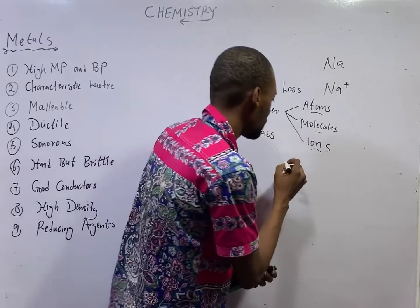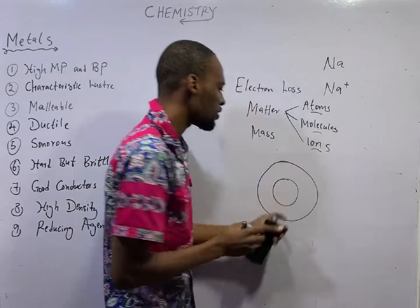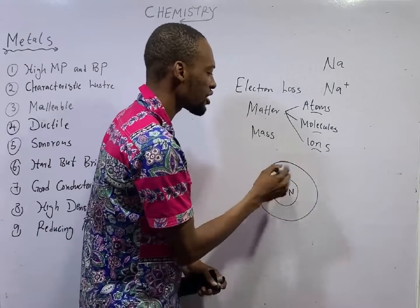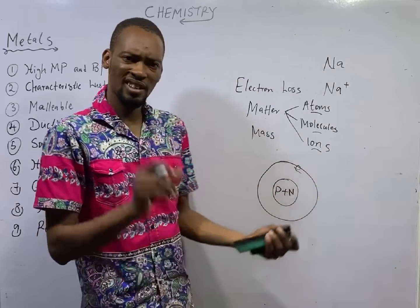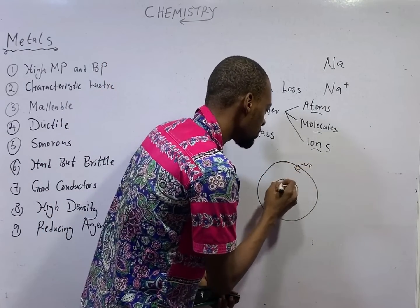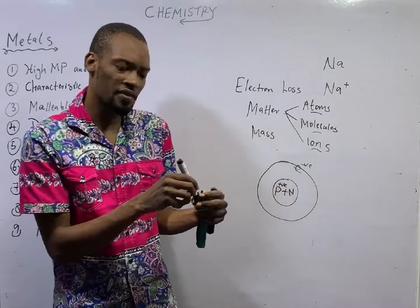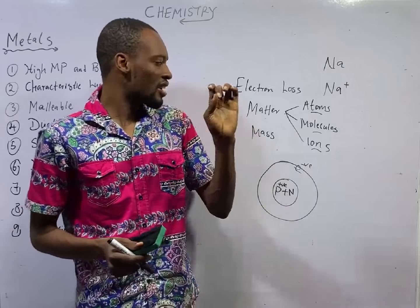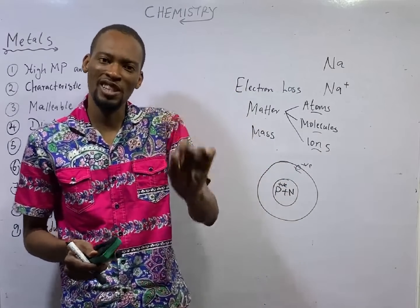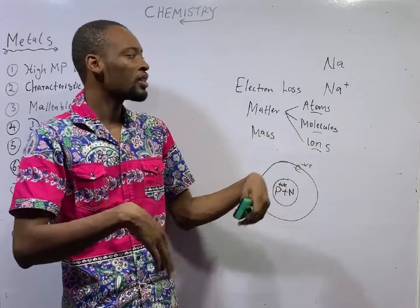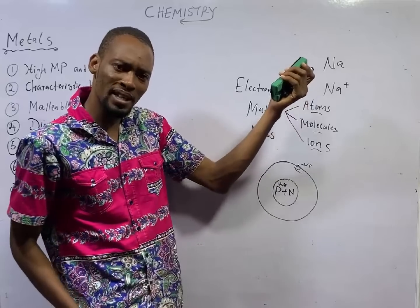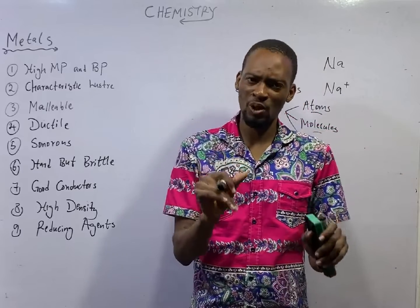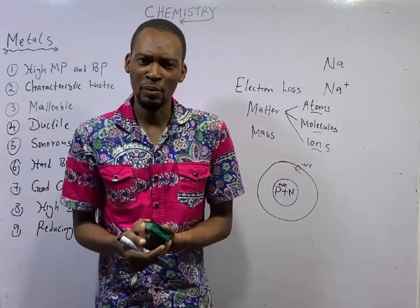An atom is made up of the nucleus. In the nucleus, you have protons and neutrons. Around the shell, you have electrons that move around. Electrons are negative, protons are positive, and neutrons do not have charge. When an element has fewer electrons in the outer shell, there is a high chance that it will give out those electrons. Group 1 elements have 1 electron in the outer shell, group 2 have 2 electrons, and group 3 have 3 electrons in the outer shell.